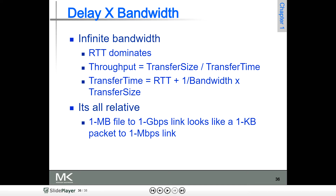Transfer time — how do we calculate it? Transfer time equals RTT plus 1 divided by bandwidth, multiplied by transfer size. That you have to keep in mind always. RTT is how much time a packet takes to move from source to destination and back, plus what is the bandwidth and the size of the file the sender is transferring.